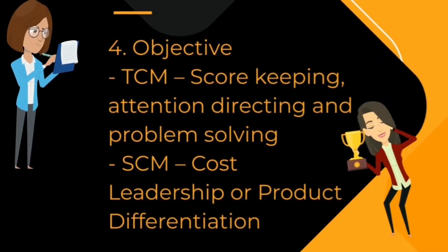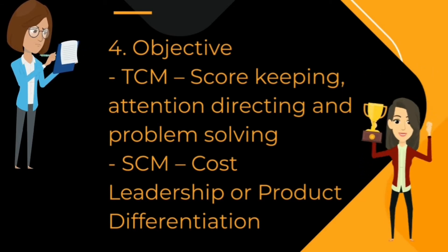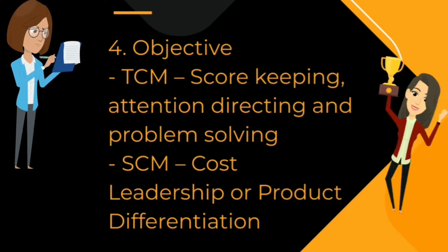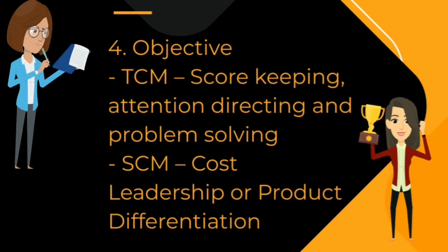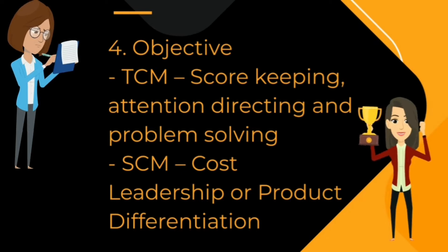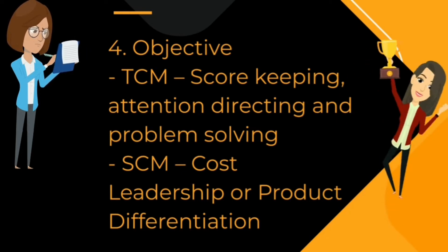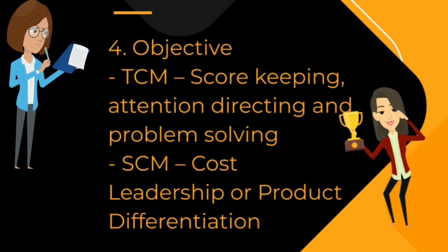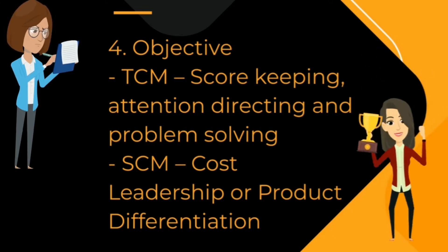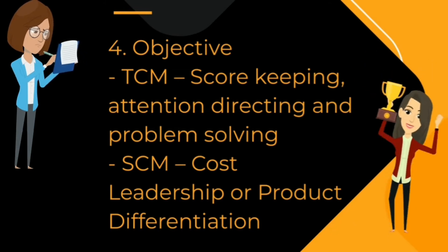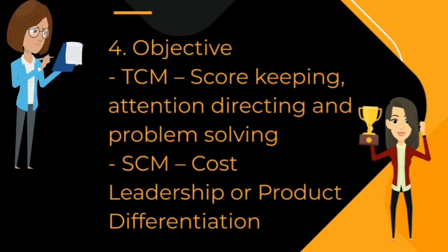Objectives of traditional cost management include score keeping, attention directing, and problem solving. Score keeping means keeping records for internal as well as external parties. Attention directing means preparing reports for management which need to be focused on due to operating problems or inefficiencies. Problem solving means identifying problems and recommending the best alternatives.